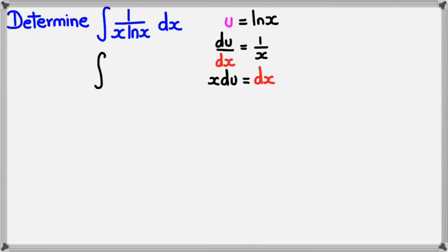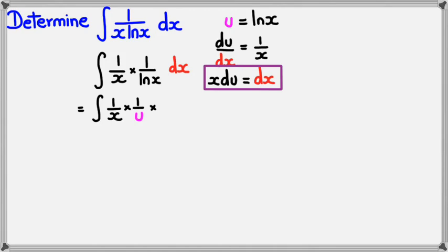All right, so let's go back to the original question and I'm going to split it up just to make things a bit easier here. So I've got 1/x multiplied by 1/ln(x) dx. 1/x I'm going to leave it as it is, but 1/ln(x) I'm going to rewrite it as 1/u. And dx, which is right here, which is x·du, so I'm going to write instead of dx I'm going to write it as x·du.